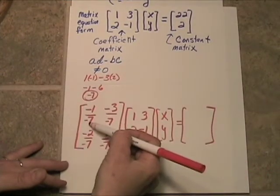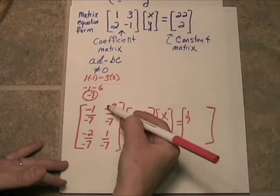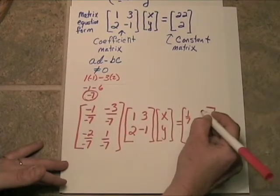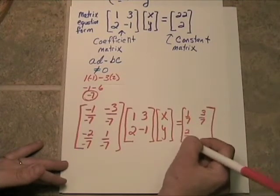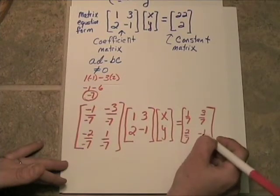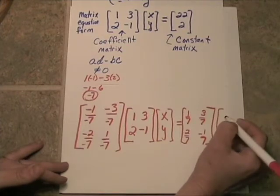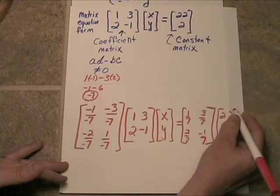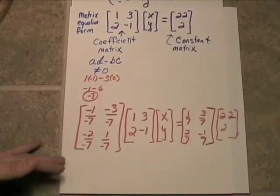Let's go ahead and reduce a little bit. Negative 1 divided by negative 7 is just 1/7. And of course negative divided by negative is a positive. So this would be 3/7. This would be negative 3/7. This would be 2/7. And here we are going to get a negative 1/7. And that will be multiplied times 22 and 2, the matrix containing 22 and 2.